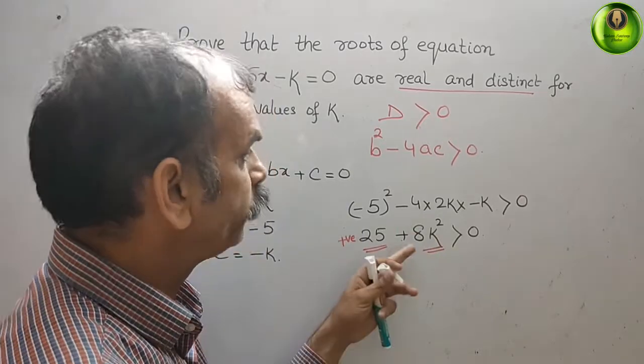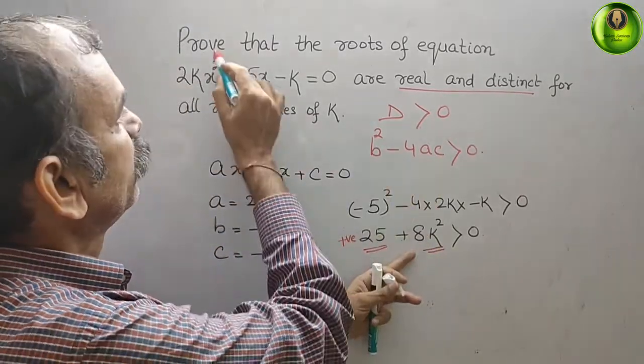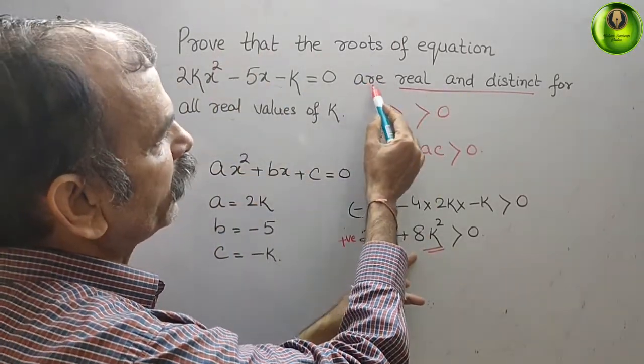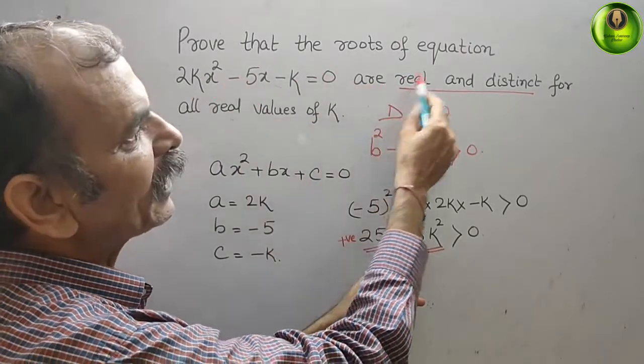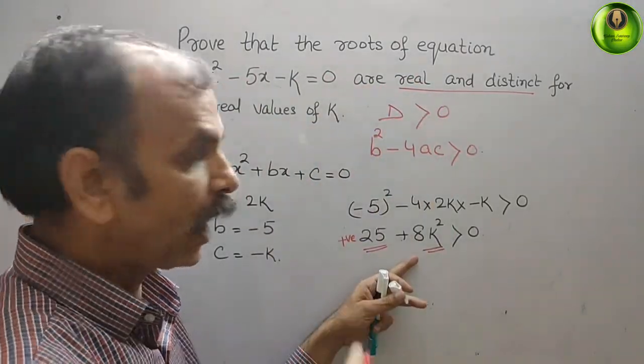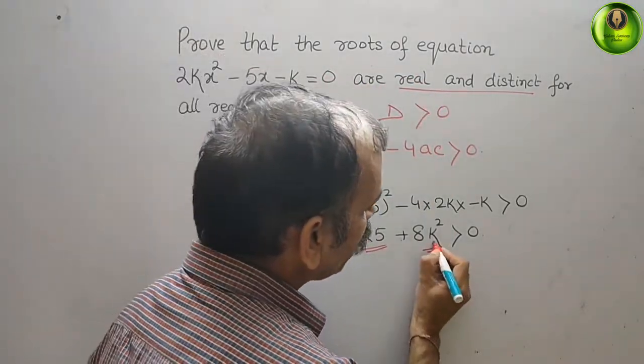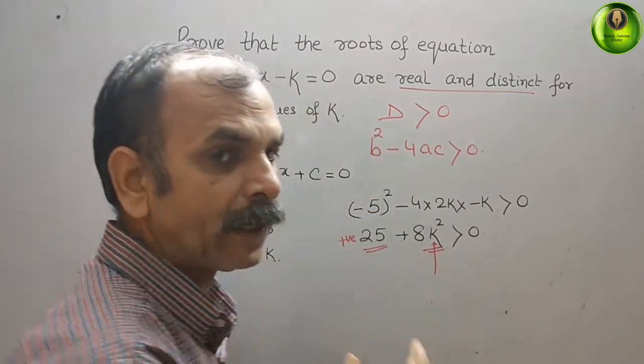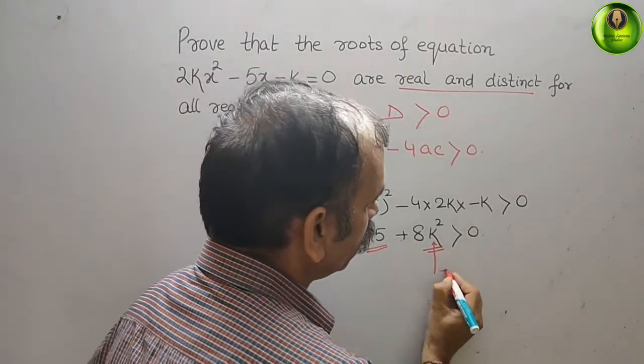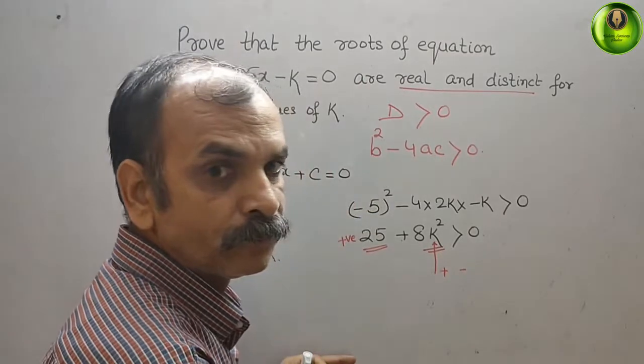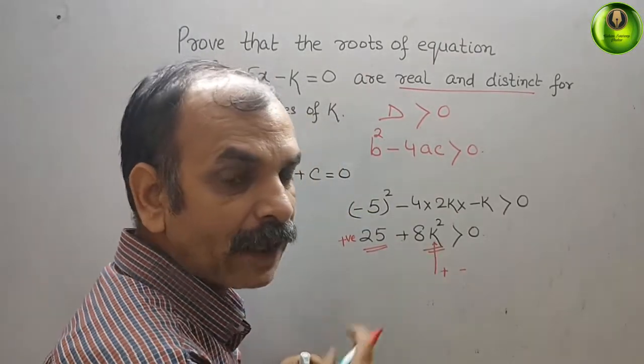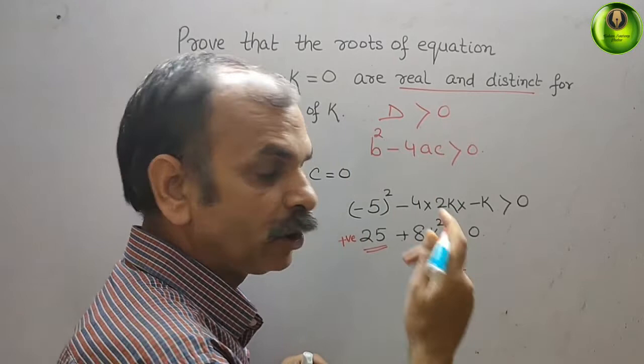And what he has told you is prove that the roots of this equation are real and distinct. Now, if you take any value of k, that may be positive or negative, here it contains k². That means it will always be positive.